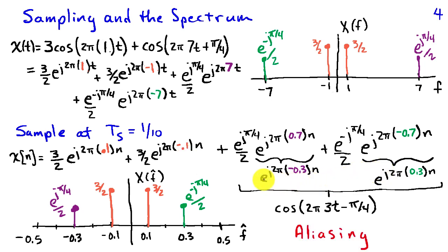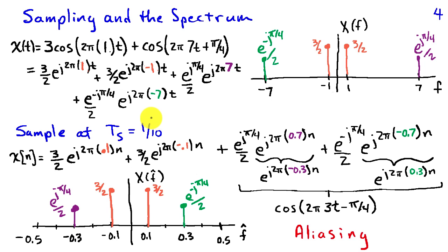If we were to reconstruct this signal in continuous time, these values correspond to cosine(2 pi · 3t - pi/4). This is an example of aliasing. The highest frequency present is 7 Hz, and with a sampling interval of 1/10, the sampling frequency is 10 Hz. But 10 Hz is not 2 times the highest frequency — 2 times 7 Hz would be 14 Hz — so we violated the conditions of the sampling theorem.